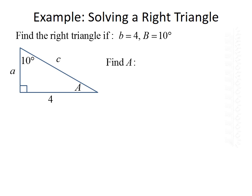We'll do this one step at a time, starting by finding the measure of angle A. In a right triangle, the two non-right angles have to add together and equal 90 degrees, so A plus B equals 90 degrees. Plugging in B, we have A plus 10 degrees equals 90 degrees, and subtracting 10 degrees from both sides gives us A equals 80 degrees.